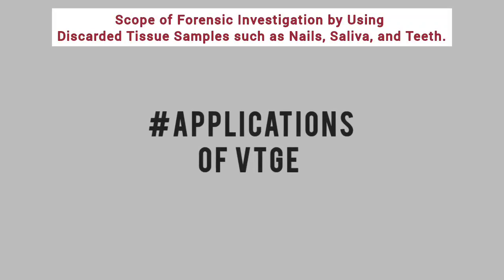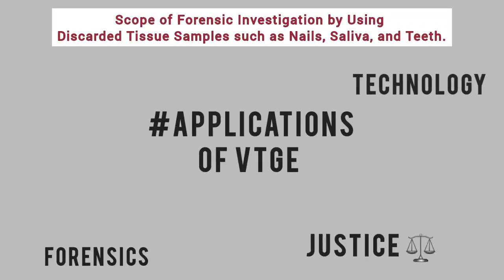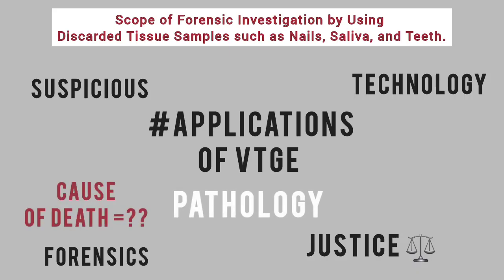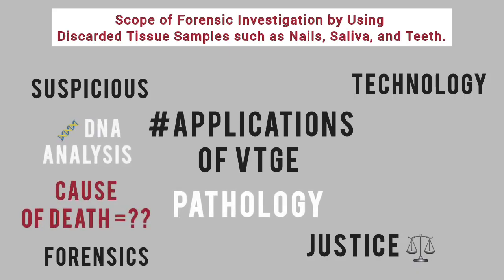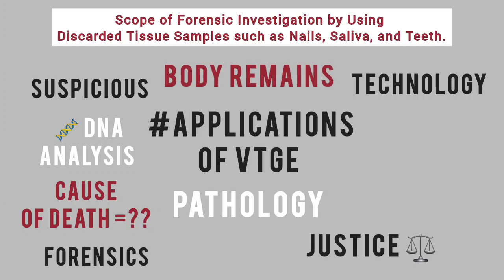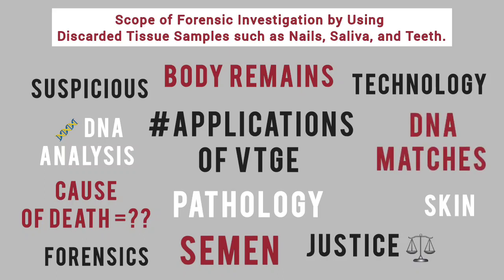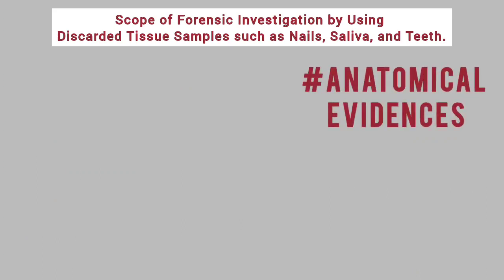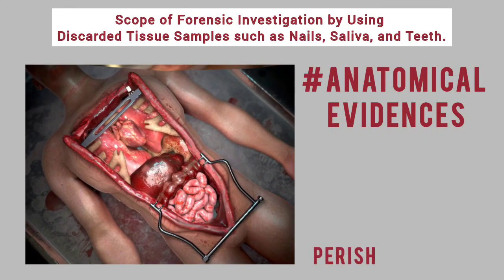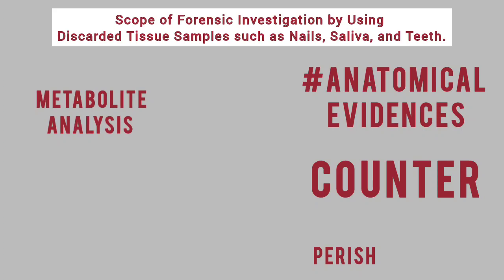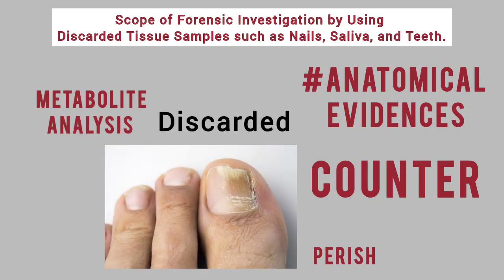Moving ahead, forensic science paves the path for justice with the help of cutting-edge technological advances. For investigating non-natural and suspicious deaths, forensic pathology comes into play to determine the cause of death. In criminal and civil cases, DNA analysis serves as a traditional tool to bring criminals to justice. Prominent pieces of evidence like hair, skin, body remains in burn cases, and semen in rape cases are analyzed for DNA matches. The time of death and probable cause is evaluated by invasive procedures like autopsy. Anatomical evidence consisting of organs tends to perish over time, and intact retrieval of these is incomprehensible. To counter these challenges, we propose a method of analysis of metabolites present in discarded tissues like nails using the novel VTGE method.